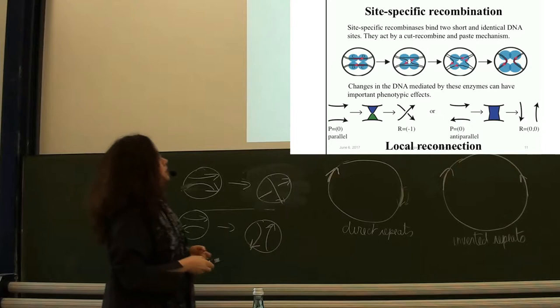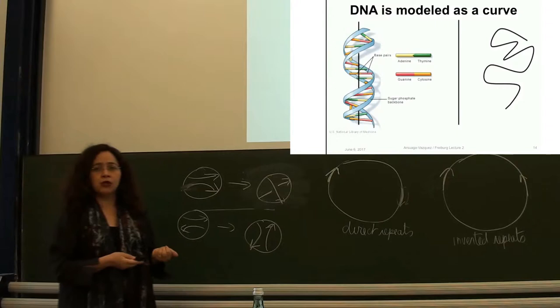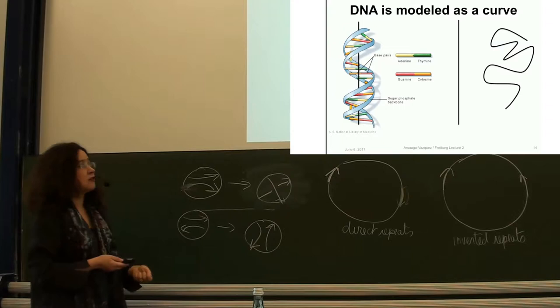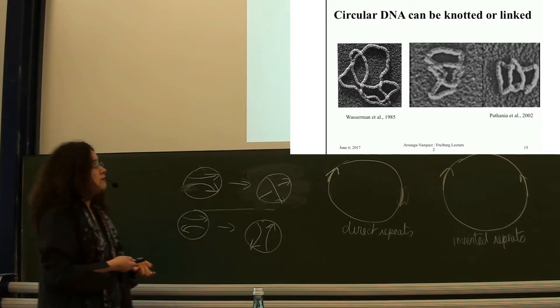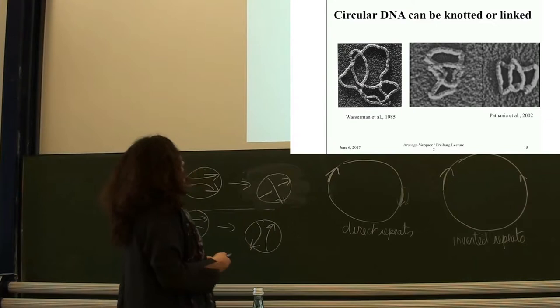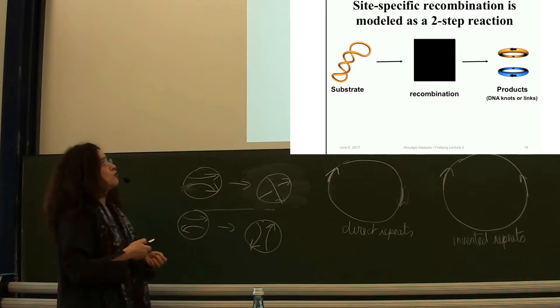Mathematical model reminder: we model DNA as a curve properly embedded in three-dimensional space — the axis of the helix. If the DNA molecule is circular, you have a proper embedding of a circle in three-dimensional space. So DNA knots are modeled as mathematical knots and/or unions of knots, therefore links. Site-specific recombination will be modeled as a two-step reaction. In the experiment we're interested in today, the substrate is a torus link of type T(2,2N).